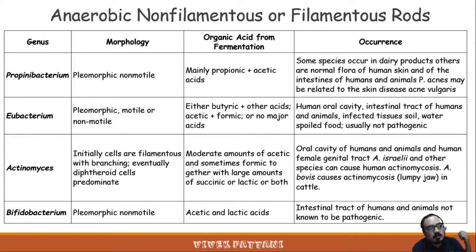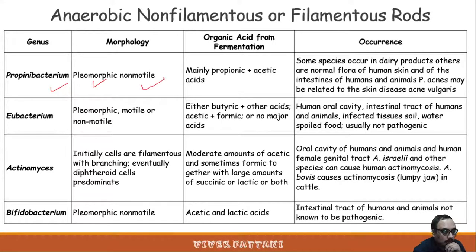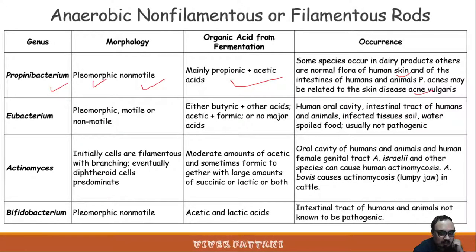Propionibacterium: morphology — pleomorphic, non-motile. Mainly propionic and acetic acid are produced from fermentation. Some species occur in dairy products; others are normal flora of human skin and intestines. One example — Propionibacterium acnes — may be related to the skin disease acne vulgaris.